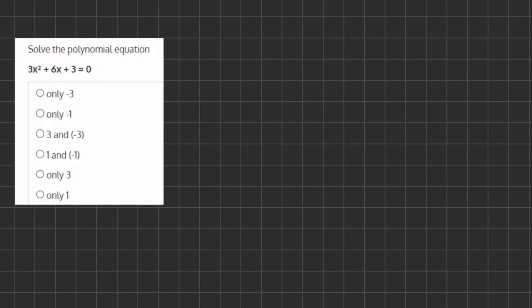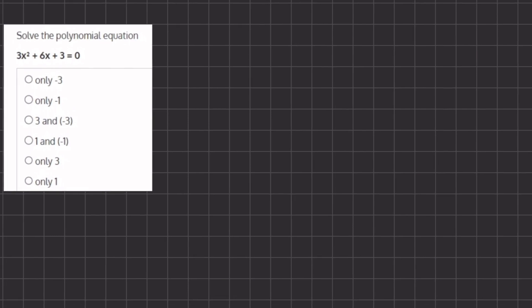In this problem we want to solve the polynomial equation. In order to do so, when we have a polynomial where the coefficient does not equal 1, we are going to factor by grouping. This has to be done first by finding two numbers a times b.